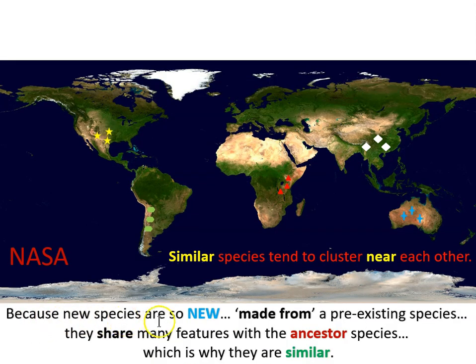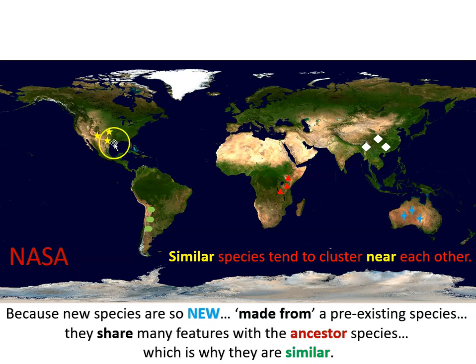Because new species are so new and are made from a pre-existing species, they share many features with the ancestor species, which is why they are similar. So this idea that species come from nearby pre-existing species explains why similar species tend to cluster near each other all around the world.